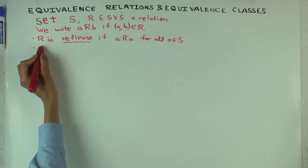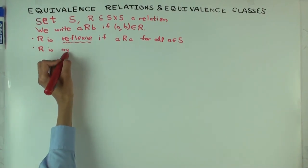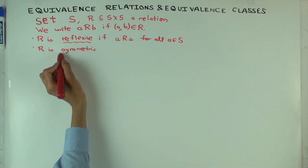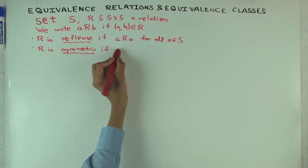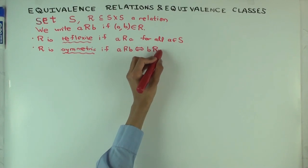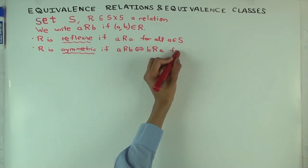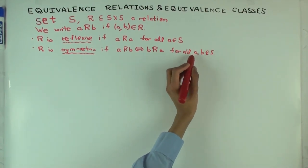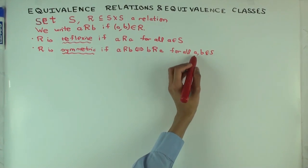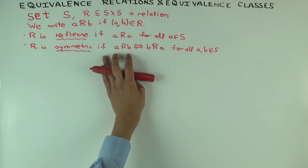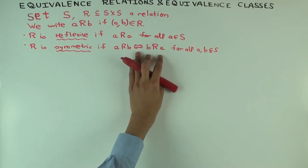We say R is symmetric if for all A, B in S: if (A, B) is in R, then (B, A) is in R. By the way, when somebody writes 'for all A, B in S,' usually that means A and B are allowed to be equal as well, though you should always check from context. So symmetry means: if A and B are related, then B and A are also related.